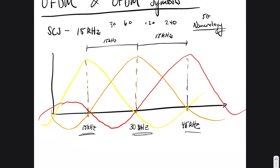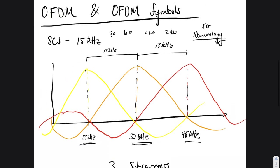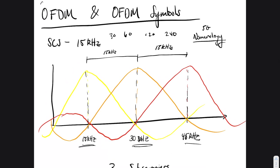Now we're trying to create OFDM symbols, and it's important to understand the SCS concept. What we've drawn here — waves at 15, 30, and 45 kHz — represents three subcarriers. Each of those waves is carrying an independent stream of data. This also brings up the orthogonality concept, which is the 'O' in OFDM.